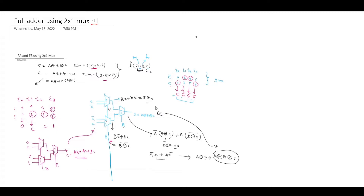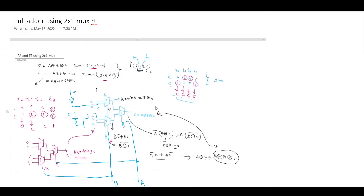The modification is like this: this is B, and this is A. I'm connecting A to the A line and B to the B line. If you connect a NOT gate here for C, you get C-bar. Here also, if you connect a NOT gate, you will get C-bar. This is the full diagram showing how to implement a full adder using a 2x1 multiplexer.